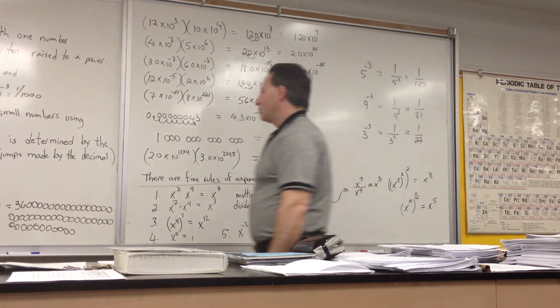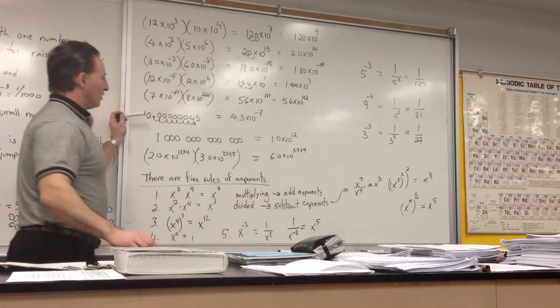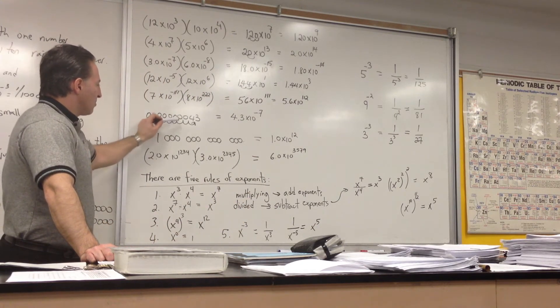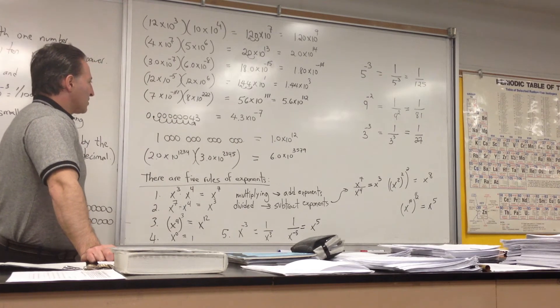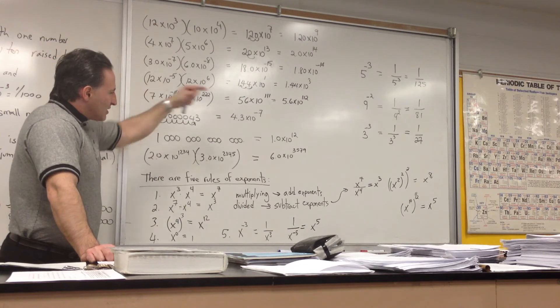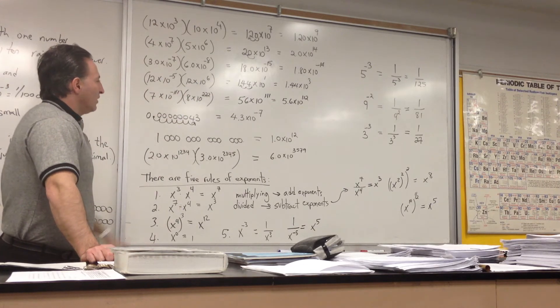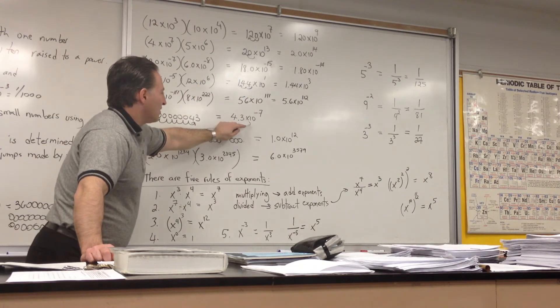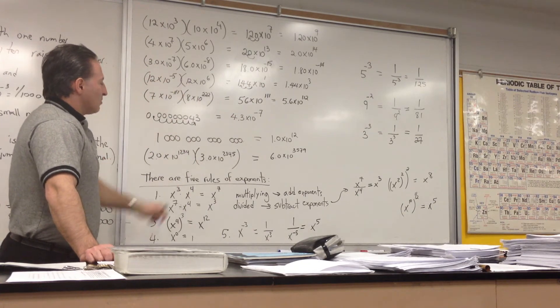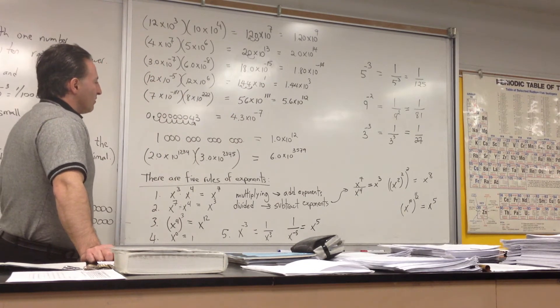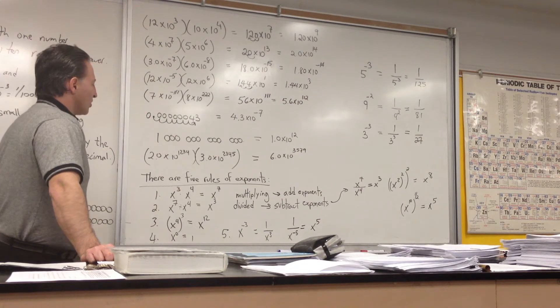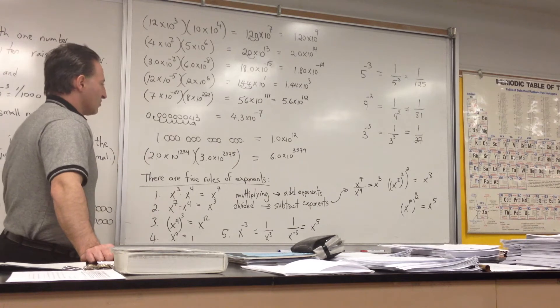Here's an example of how you rewrite a number that has lots of zeros in it as scientific notation. You simply skip the decimal over the requisite number of times, so that ends up as one number to the left of the decimal and whatever is left over to the right. And you end up with 4.3 times 10 to the minus 7. So there are 7 jumps, and you move the decimal into the more negative direction when you move your decimal to the right. So your exponents become more negative as you move the decimal to the right.